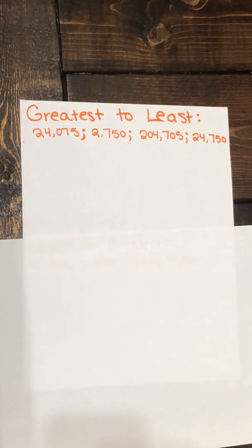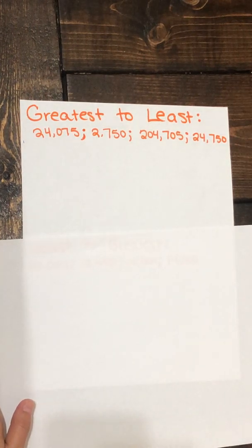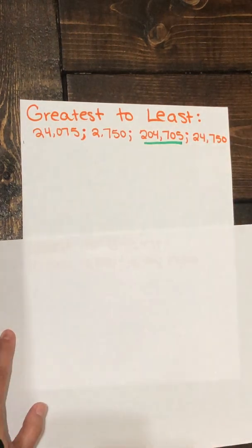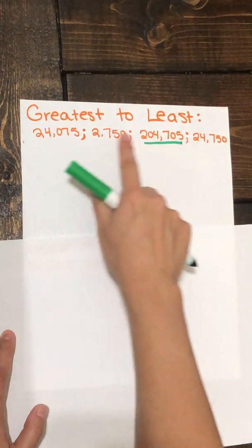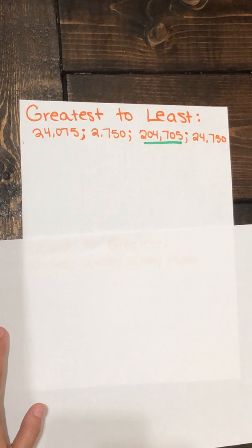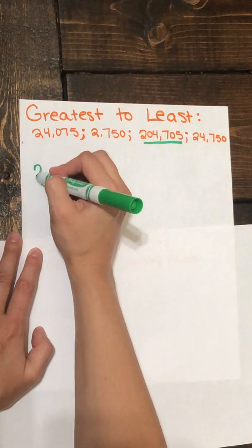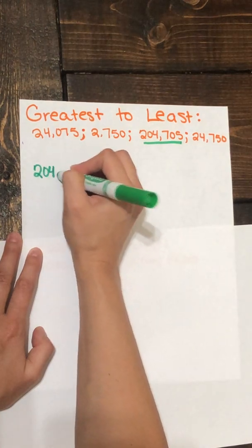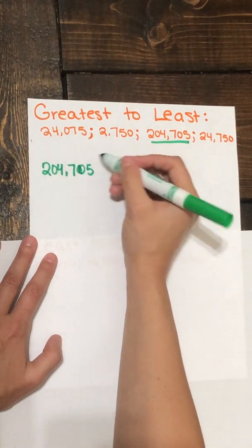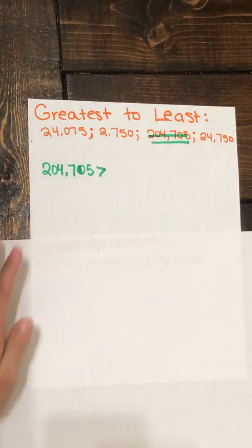So one thing that jumps out to me is I see I only have one number that goes to the hundred thousands place and that's this one right here: 204,000. I don't have any other number that has a digit in the hundred thousands place. So I know that this is the greatest number. So I'm going to go ahead and write that one first and I'm going to put 204,705 and I know that's greater than whatever number comes next. When I'm done with it let's mark it out so we don't get confused.